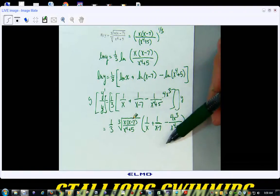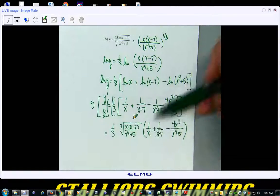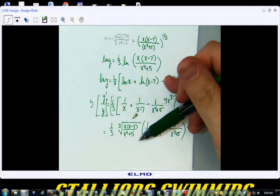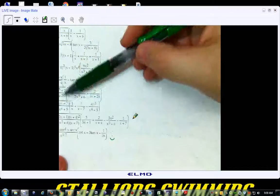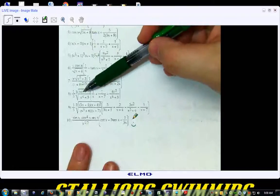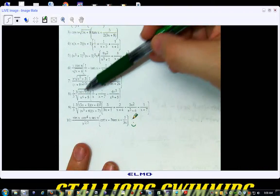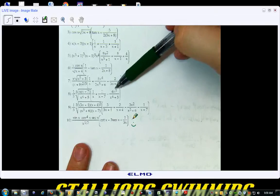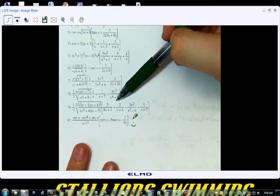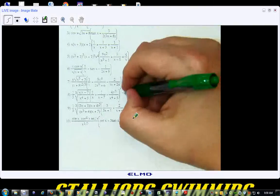Now, if we check the answers, we should get something that looks very similar to this. There's your 1/3rd, there's the crazy cube root, 1 over x, 1 over x minus 7 minus 4x cubed over x 4th plus 5. Again, we're good to go.